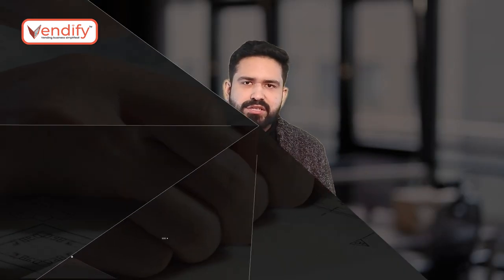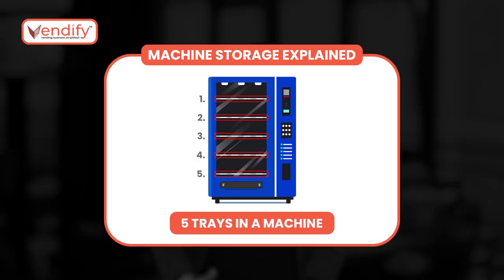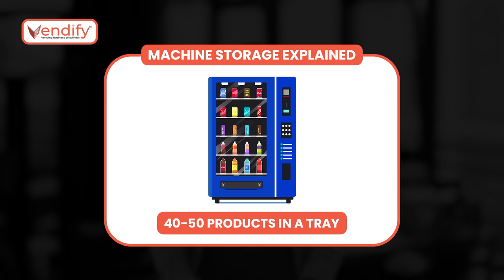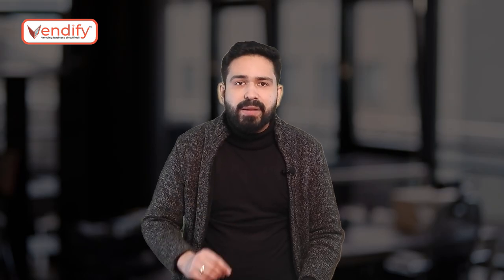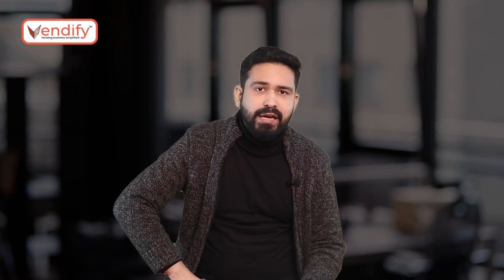Now let's talk about the specifications of these machines. Generally, there are 5 trays in a vending machine. You can put around 40 to 50 products in each tray, so you can put around 200 to 250 products in a single vending machine. However, this widely depends on the manufacturer. Some manufacturers also provide customized vending machines for bulk orders. We have created a video on some prominent vending machine manufacturers — you can click on the i button to watch that video, and there is also a link in the description box.